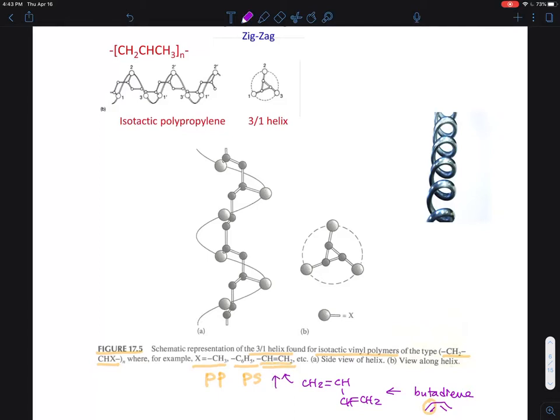This thing sticking out is a side group. The nomenclature for this is 1,2-polybutadiene, and it's isotactic. So isotactic polypropylene, isotactic polystyrene, and those are all different polymers forming what they call 3-to-1 helices.